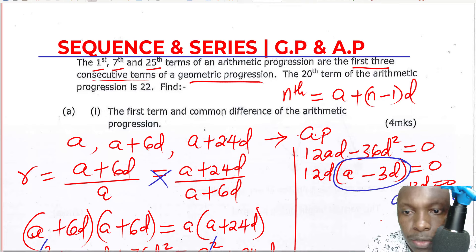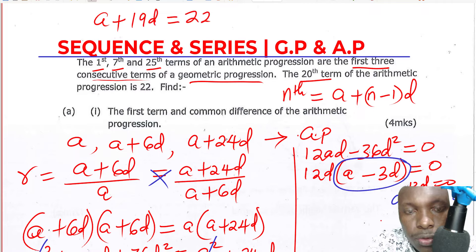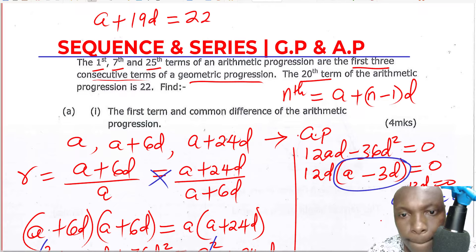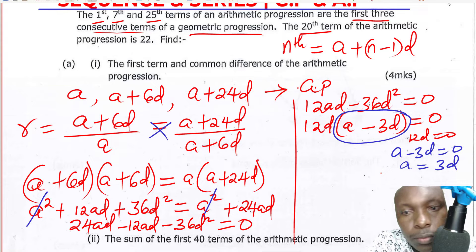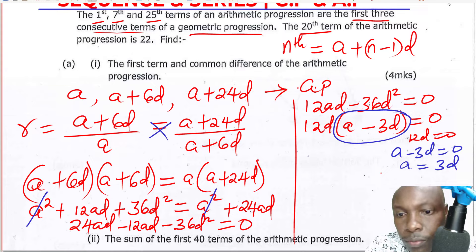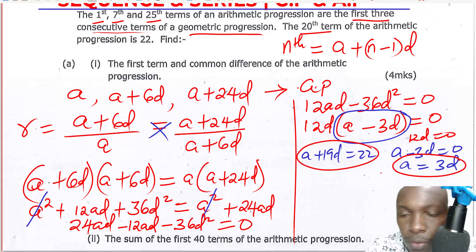Now we use the other given condition: the twentieth term of the arithmetic progression is twenty-two. The twentieth term is written as A plus 19D, and that equals 22. So A plus 19D equals 22.